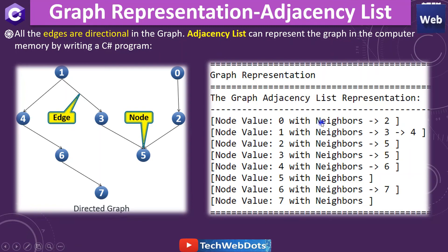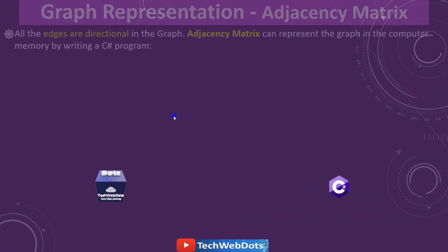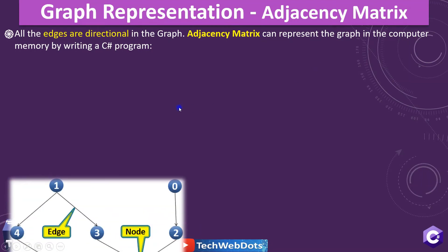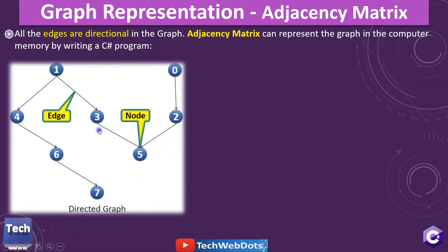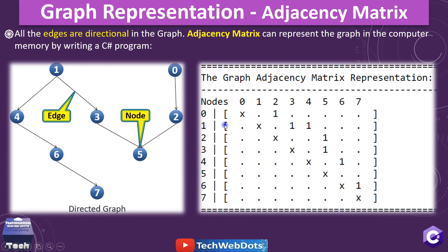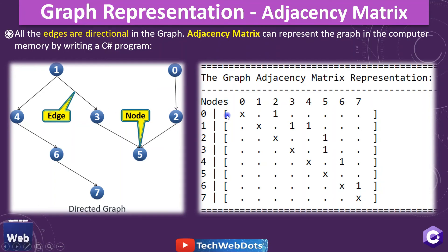Now the next point is how the adjacency matrix looks. The example will be the same unweighted directed graph. The adjacency matrix has nodes 0 to 7 on both the horizontal and vertical axes. Where there is an intersection marked with a cross, for example from 0 to 0 there is no distance and no path, so we mark that position accordingly.